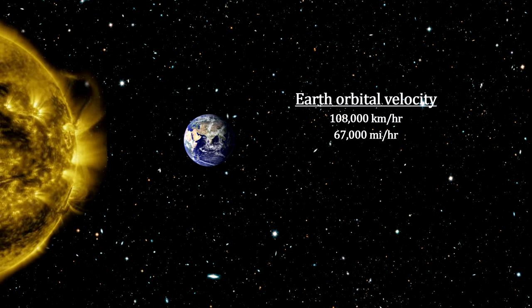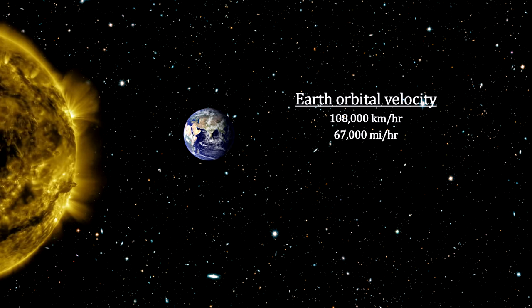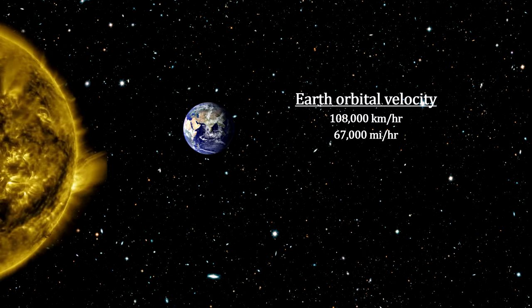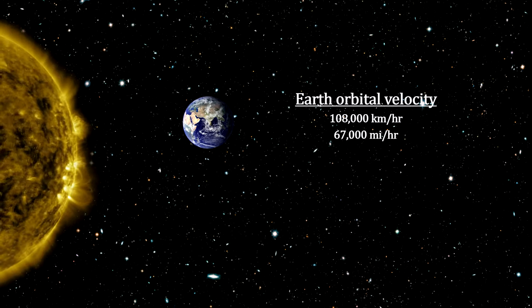Note that the Earth's average speed around the Sun is 108,000 km per hour, or 67,000 miles per hour.